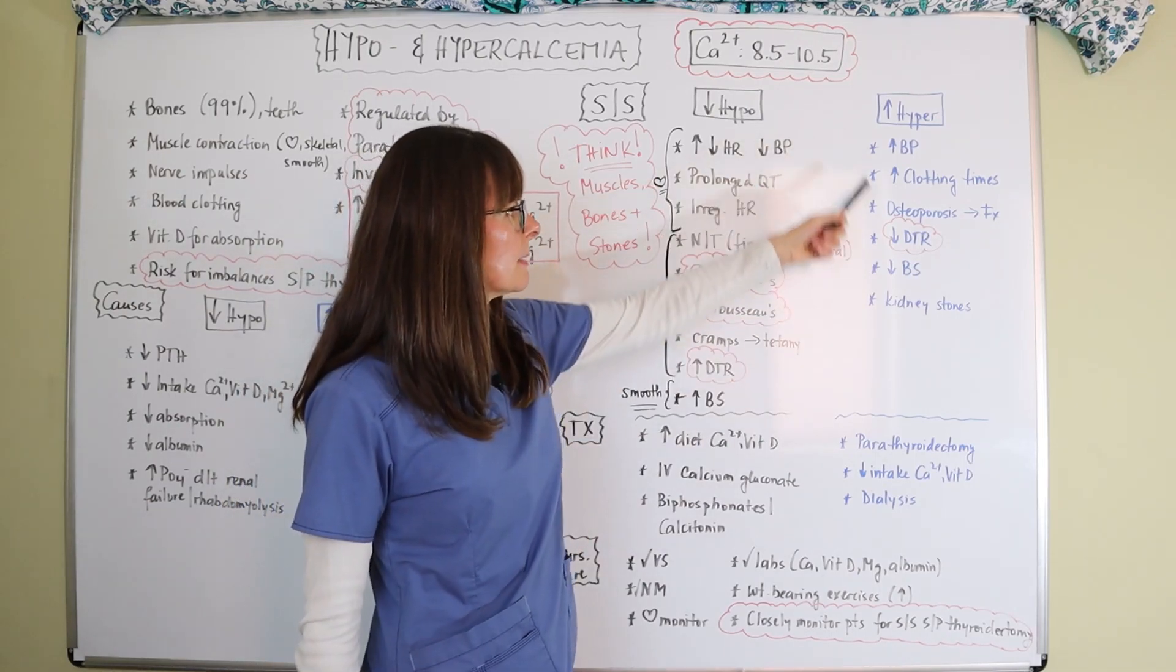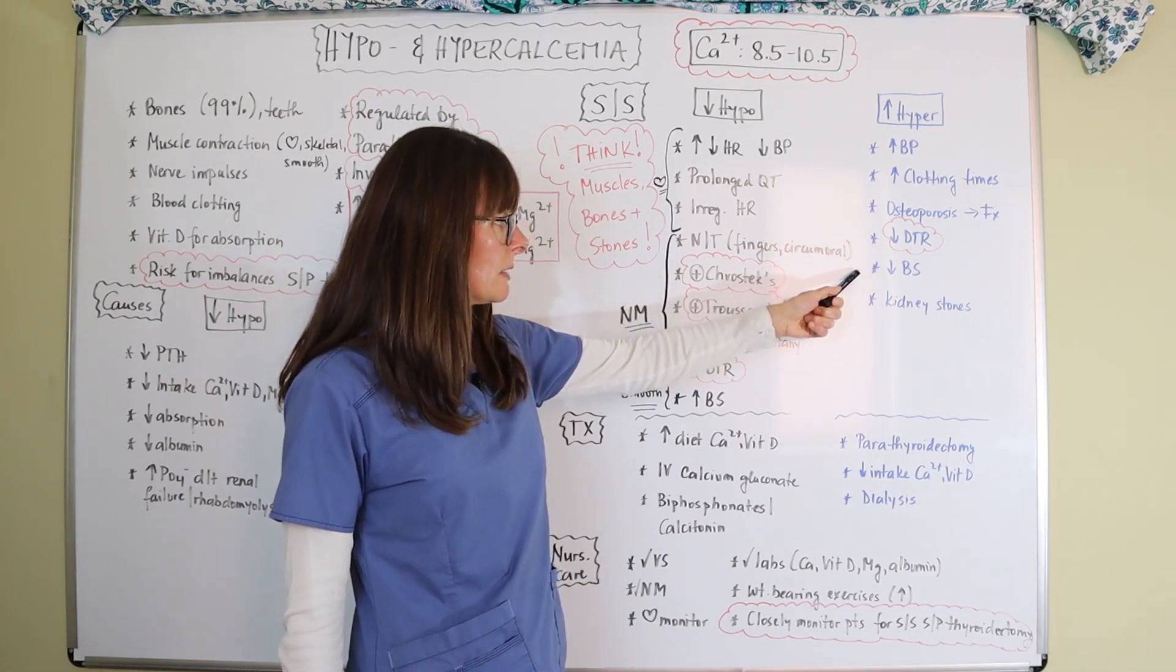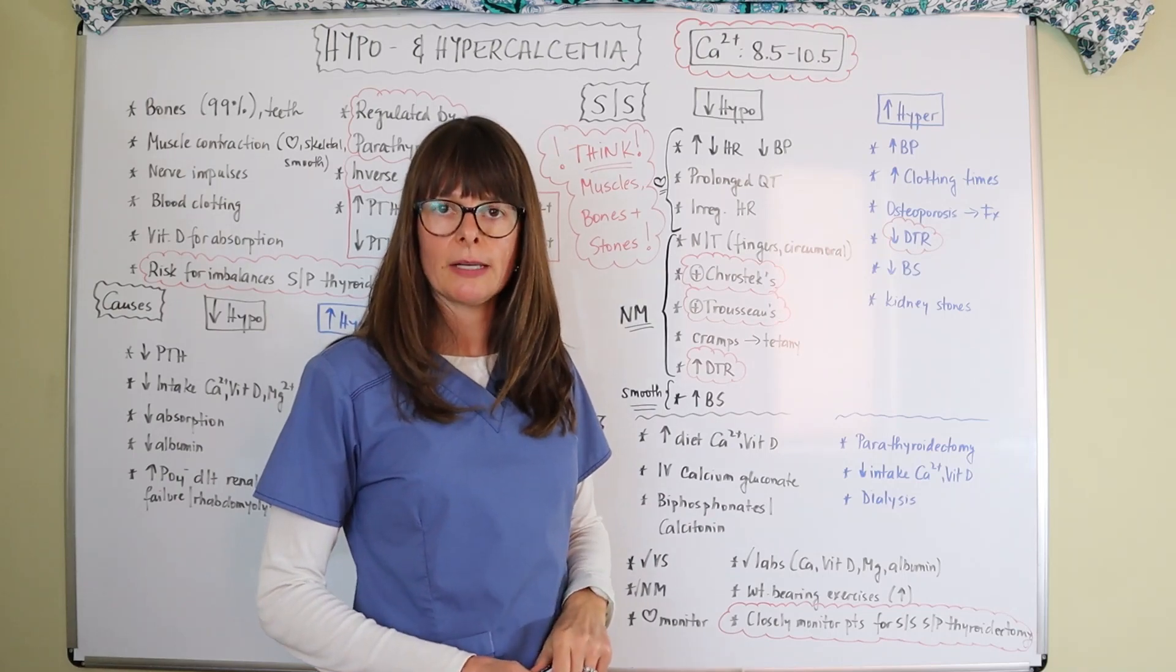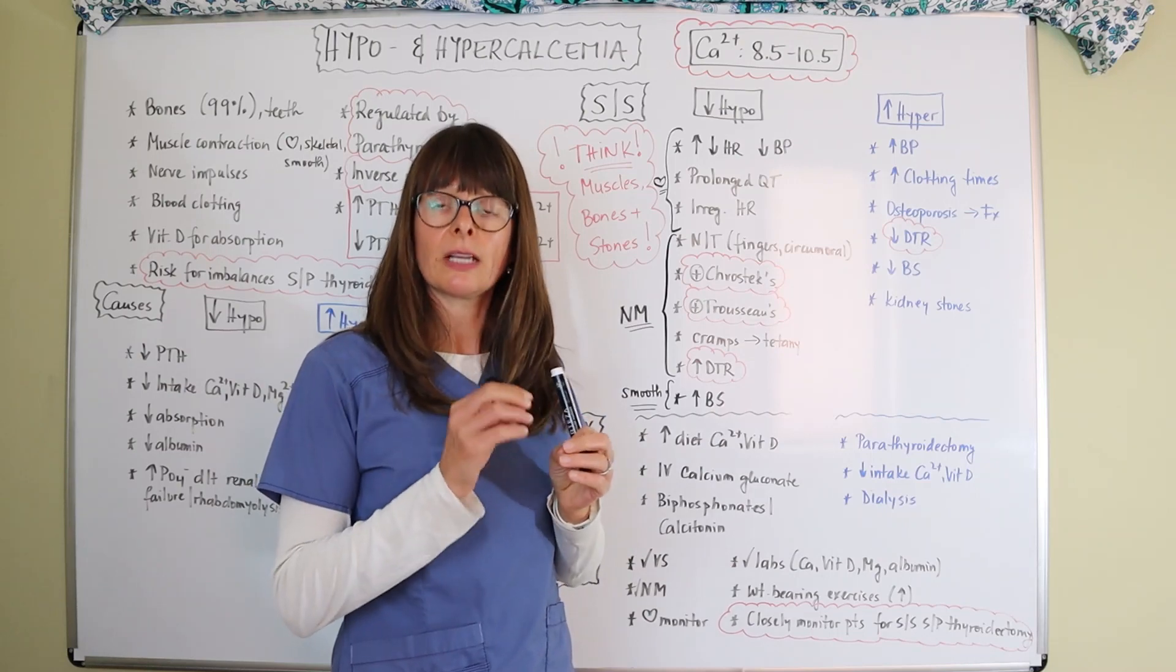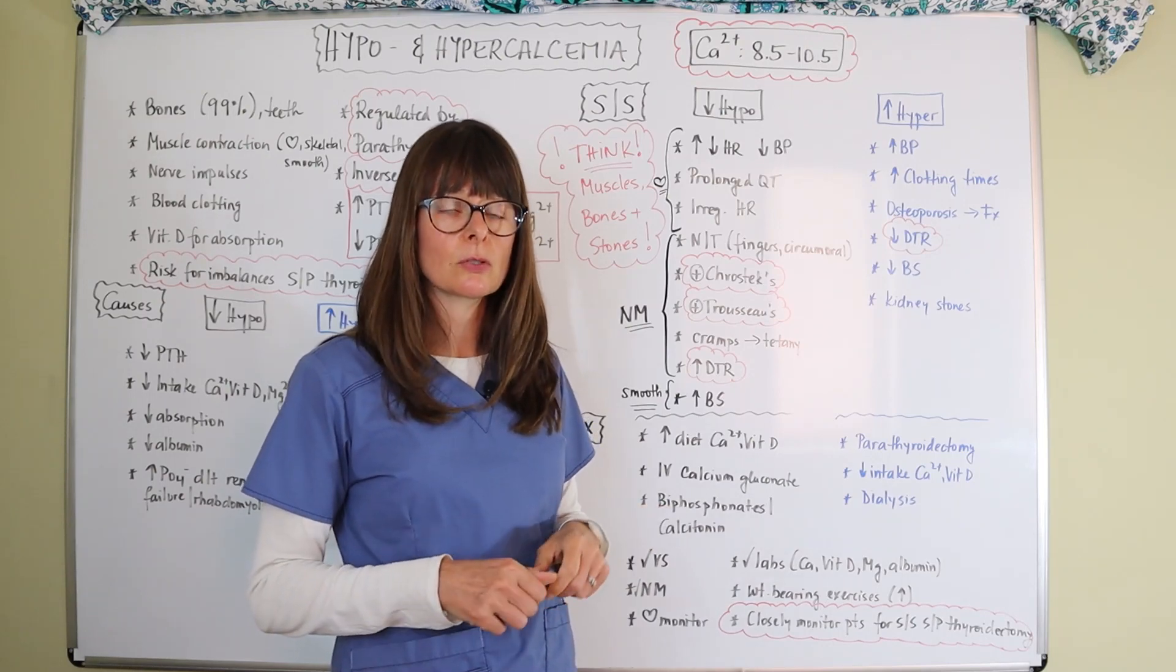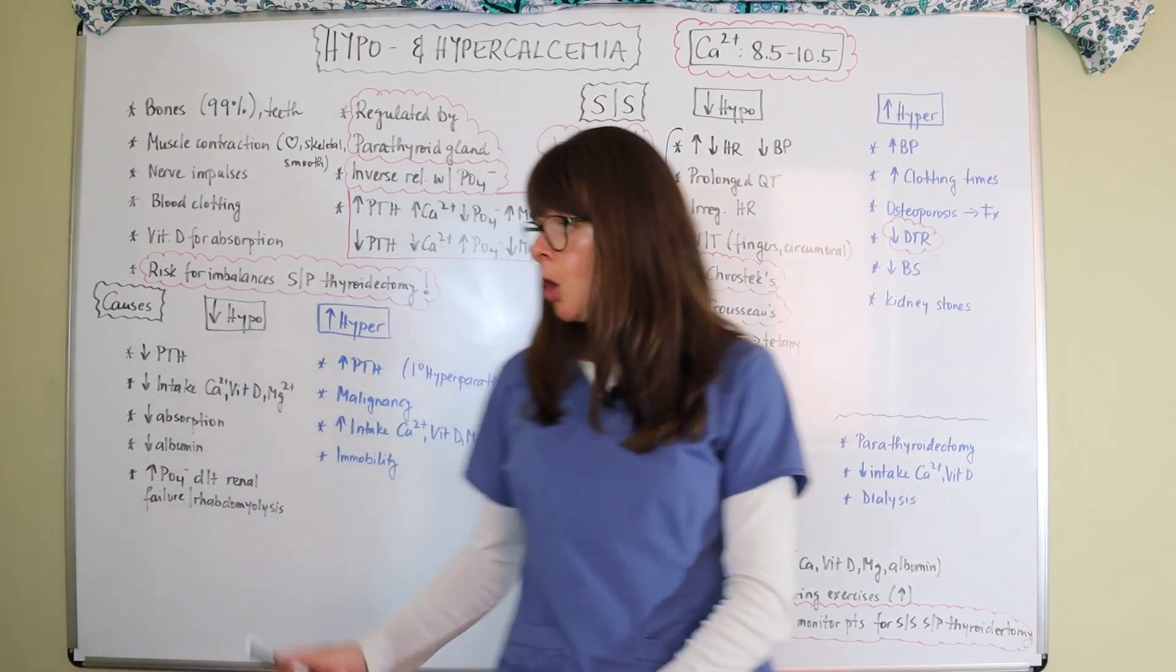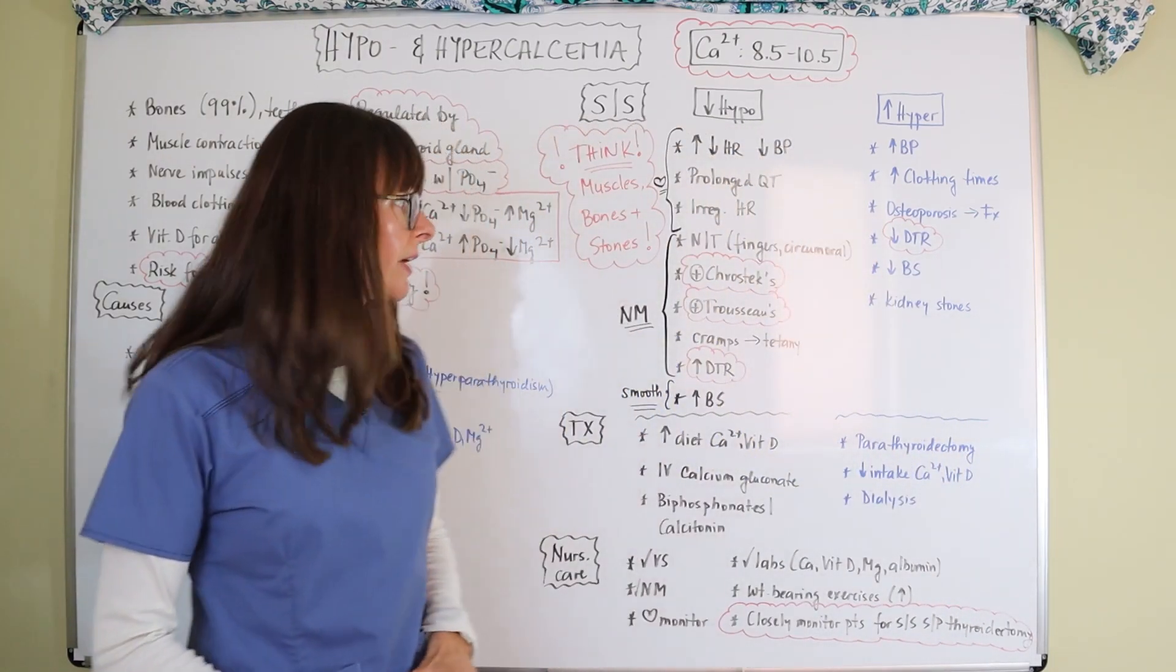For hypercalcemia, also the deep tendon reflexes will be decreased as well as bowel sounds will be decreased and it can lead to kidney stones. Most kidney stones consist of calcium oxalate. And so if there's too much calcium in the bloodstream, they get stuck in the renal tubules and can form these crystals of calcium oxalate leading to kidney stones. So if there's somebody who all of a sudden develops kidney stones and they don't have a history, think about hypercalcemia or something to do with vitamin D or magnesium intake and review their supplement intake. Very, very important.